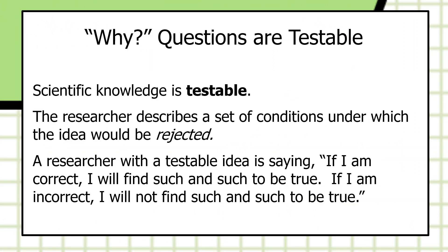To reiterate the themes of this chapter: scientific knowledge is testable. The researcher describes a set of conditions under which the idea would be rejected. You've probably heard about the falsifiability principle before. If I'm going to test a hypothesis, I must also be saying: if I find this set of results, I will reject my idea or reconstruct the explanation. A researcher with a testable idea is saying: if I am correct, I will find such and such to be true; if I'm incorrect, I will not find such and such to be true, and I will say that I'm incorrect.